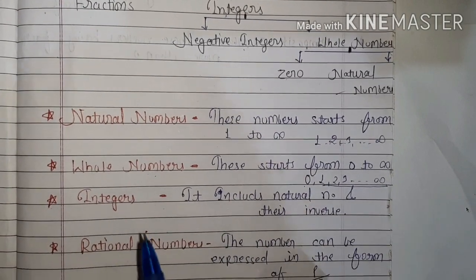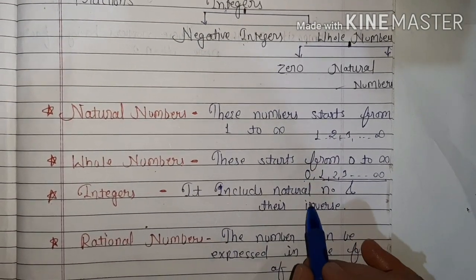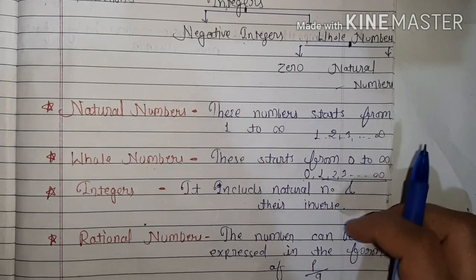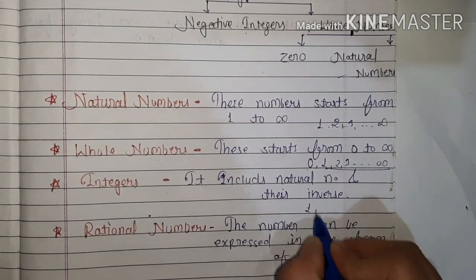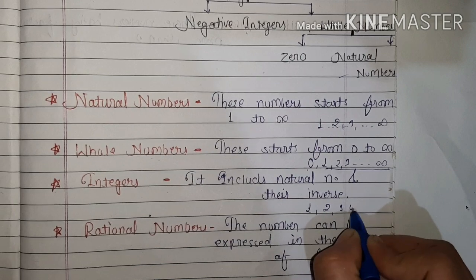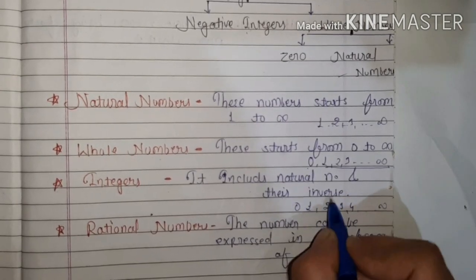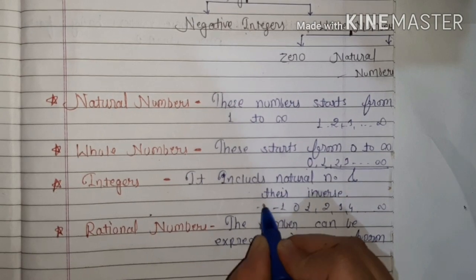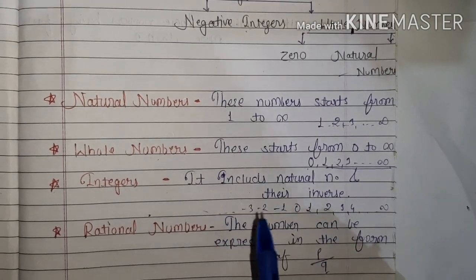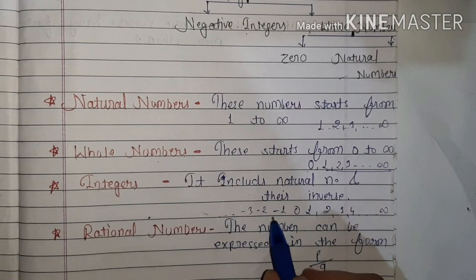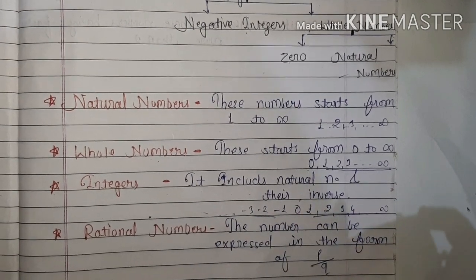Third are integers. What are integers? Integers include natural numbers and their inverses. These numbers are made by one, two, three, four and so on, plus zero, and also the inverse: minus one, minus two, minus three and so on. So integers include negative integers, zero, and positive integers.